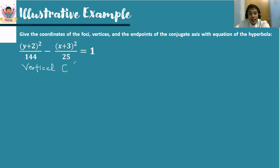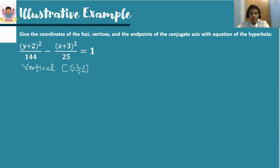Now let us identify the center at HK. Remember that h always goes along with the x value, so we invert the sign of positive 3 — in the formula it's positive, but in the center it's negative 3. And for the k coordinate of the center, we get it from the y minus k part. Since it is positive 2 in the formula, on the center we write it as the opposite sign, which is negative 2. So therefore the center of the hyperbola is located at (negative 3, negative 2).